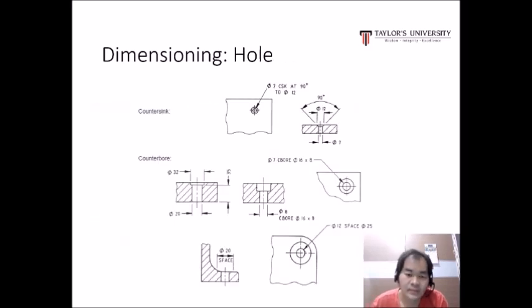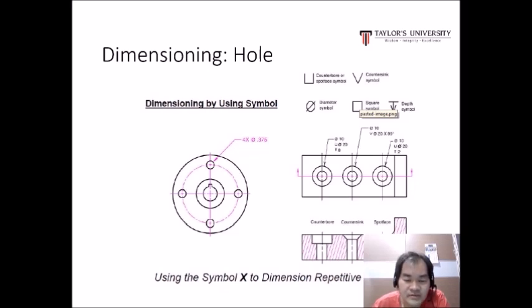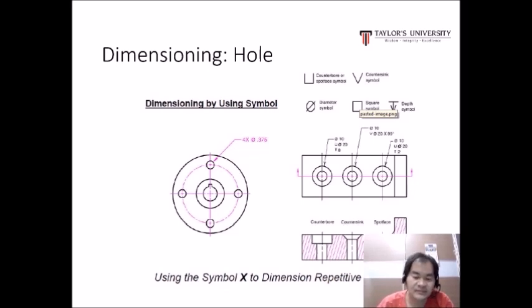Dimensioning a hole includes features such as a countersink and counterbore. The symbol for a counterbore is shown, along with the countersink symbol. Ø is the diameter symbol, and the notation '4× Ø0.375' means there are four holes. The difference between a counterbore and a spot face is that a spot face has a shallow recess, while a countersink has a tapered recess.